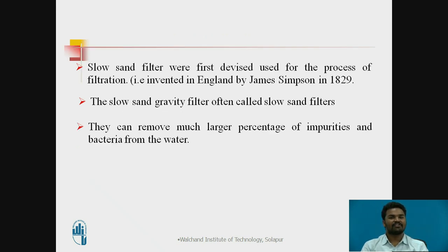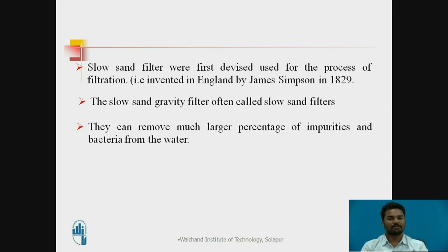Slow sand gravity filters are the first device used for the process of filtration. They were invented in England by James Simpson in 1829. Slow sand gravity filters, often called slow sand filters, can remove a much larger percentage of impurities and bacteria from the water.